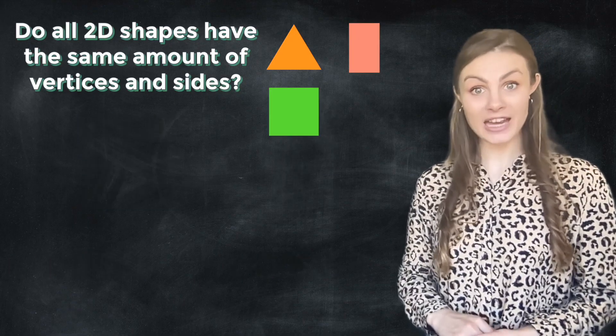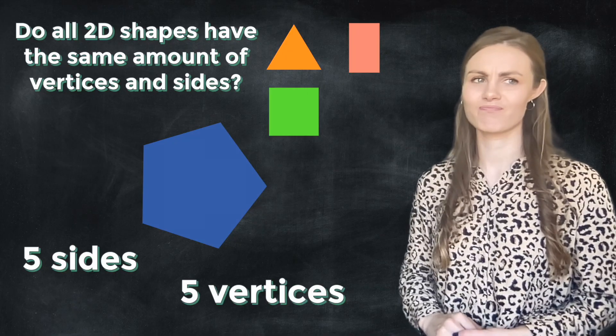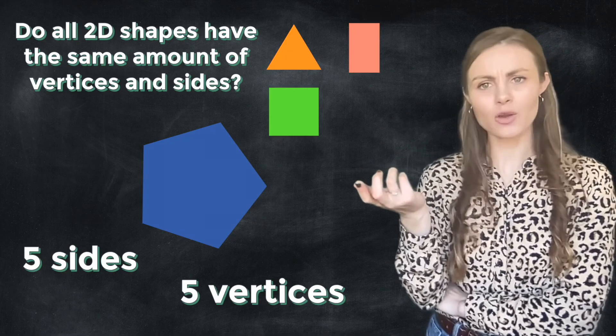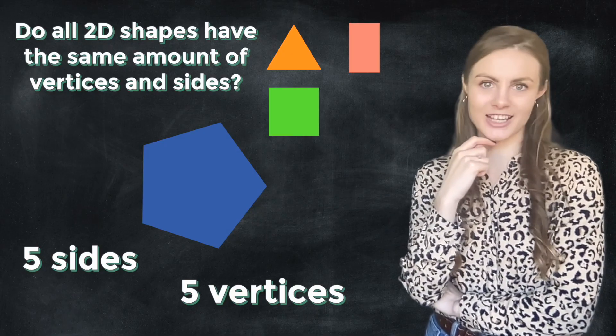And then we had our pentagon. Our pentagon had five sides and five vertices. Hmm. It looks to me like all shapes do have the same amount of sides and vertices, but let's test one shape that maybe we haven't looked at yet.